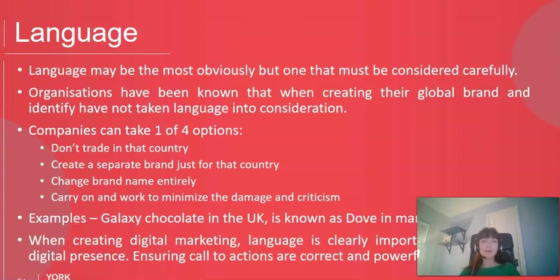When considering global trading, our options include not trading in a particular country, or having a completely different brand there. For example, in the UK we have Galaxy chocolate, but my Chinese students tell me it's called Dove in China. That presents a conflict because in the UK, Dove is a beauty brand for women with values around inner and real beauty — very different brand values from a chocolate bar.